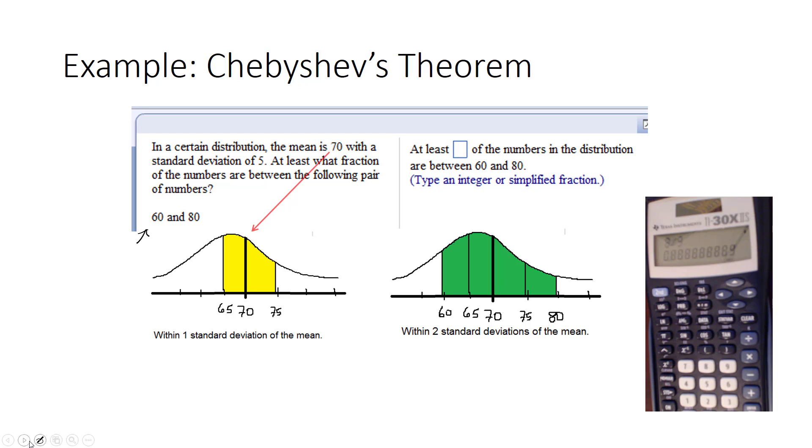And that is exactly the type of question where we can answer with Chebyshev's theorem. We would plug in 1 minus 1 over k squared would be 1 minus 1 over 2 squared. K is 2 in this case because it's two standard deviations of the mean to be between 60 and 80.